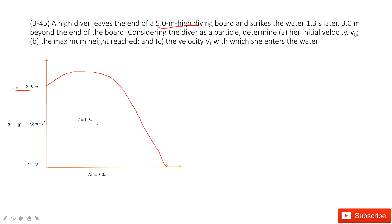The time taken is 1.3 seconds, the x displacement is 3 meters, and the problem asks you to find the initial velocity. We know the acceleration is pointing down due to gravity — negative g, negative 9.8 meters per second squared. So those are all the knowns, and we need to find the unknown v0.